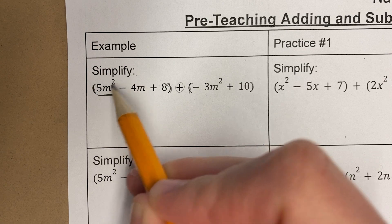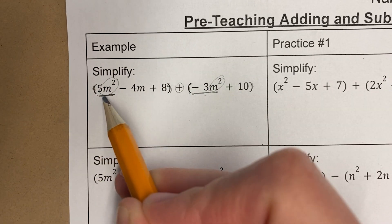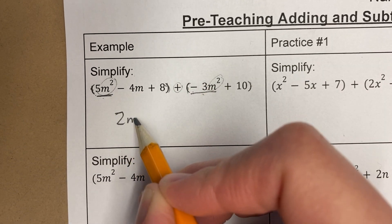This is 5m squared, right? Remember I'm looking for variable and exponent the same. Here's the same. So those two are like terms. 5m squared and minus 3m squared. That's 2m squared.